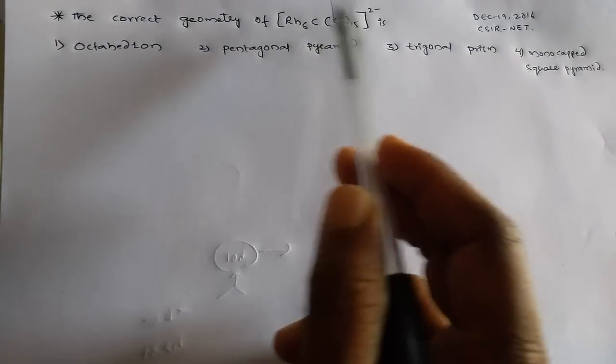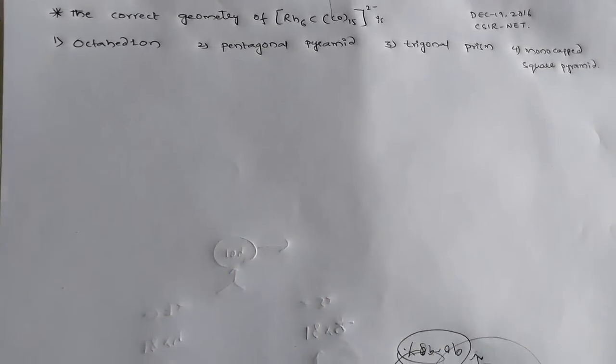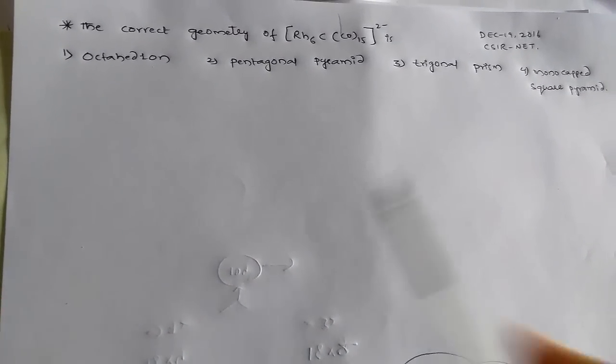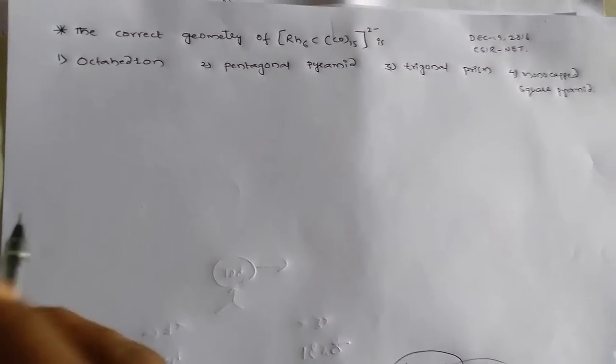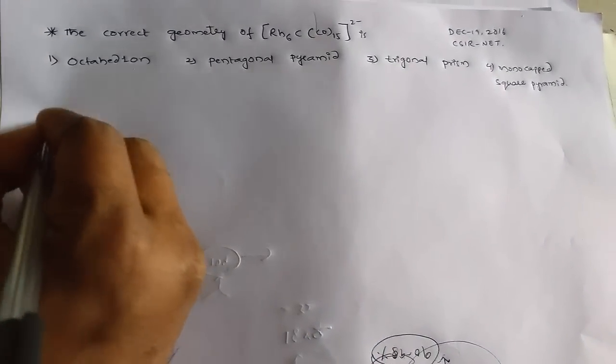To know the geometry of this rhodium complex, we should find the valence electron count of this rhodium complex.